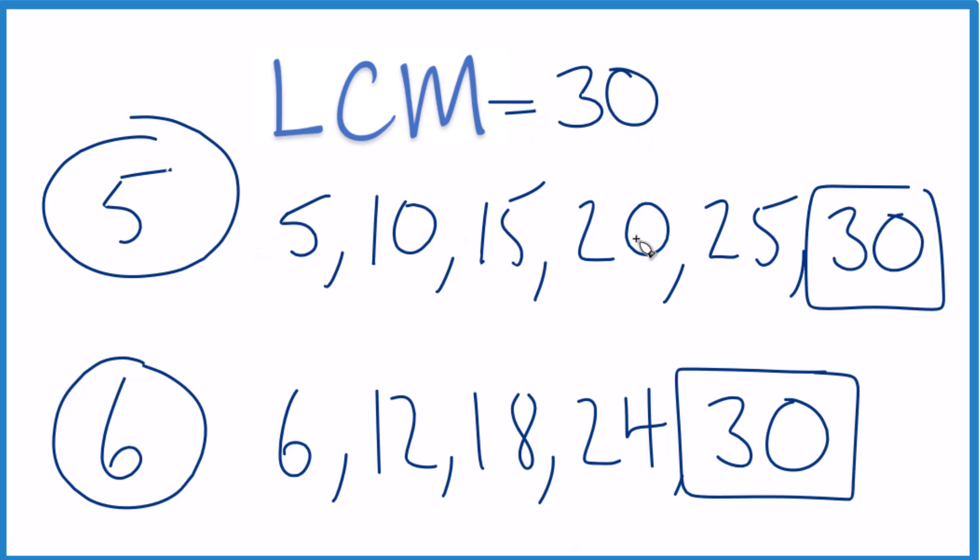You could also think about these multiples as 1 times 5 gives us 5, 2 times 5 is 10, 3 times 5 is 15, and so on. Or you can just add them up like I did, either way.